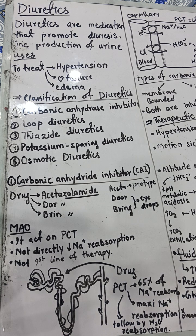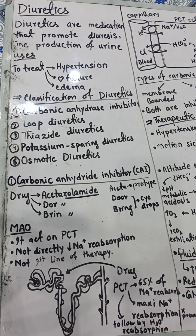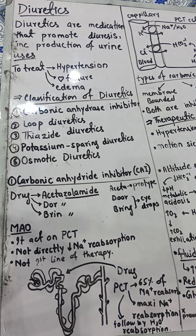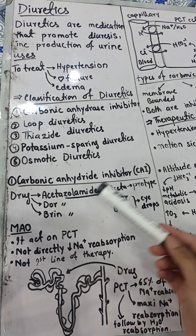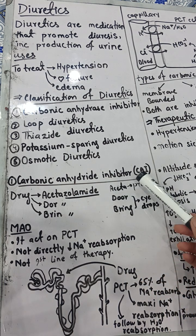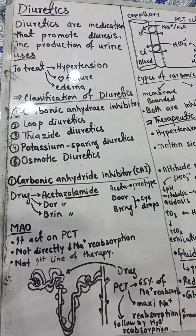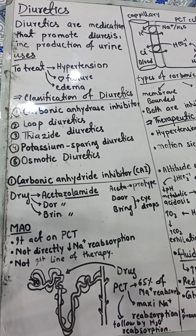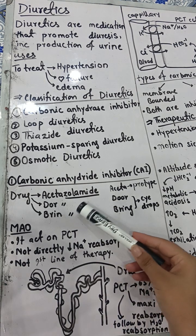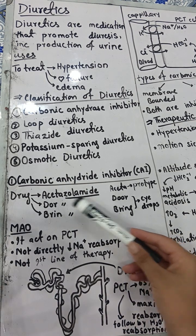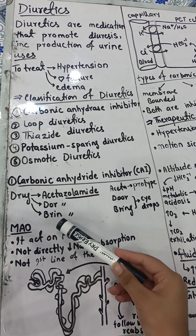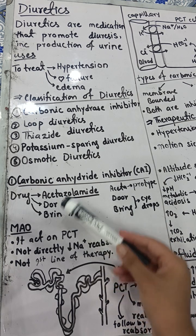The first classification is carbonic anhydrase inhibitors, also called CAI. There are three drugs in this group: acetazolamide, dorzolamide, and brinzolamide. The suffix for all three drugs is 'zolamide' — acetazolamide is the prototype drug.